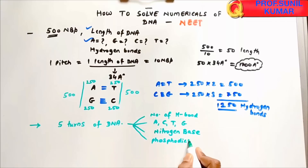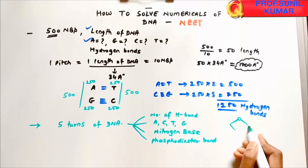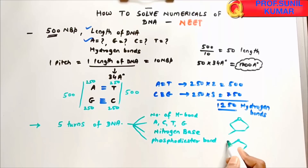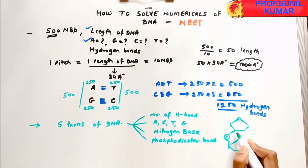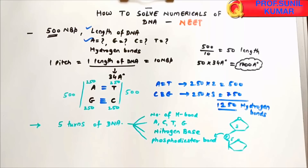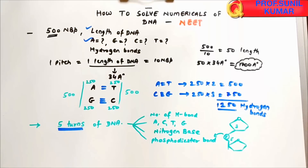First, let's understand phosphodiester bonds — it is a bond between the sugar and the phosphate, specifically between carbon-3 and carbon-5 of the sugar. Now for 5 turns: in one turn there are 10 nitrogen base pairs, so 5 turns = 5 × 10 = 50 nitrogen base pairs.